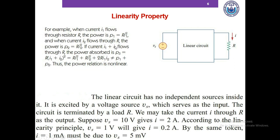Let's also look at the homogeneity property. P equals I squared R, so if you double the current, I1 becomes 2I1 and the power becomes 4P1. Doubling the current makes the power 4 times the original value, which means it also violates the homogeneity property. If two variables violate at least one of these properties, we call them non-linear.